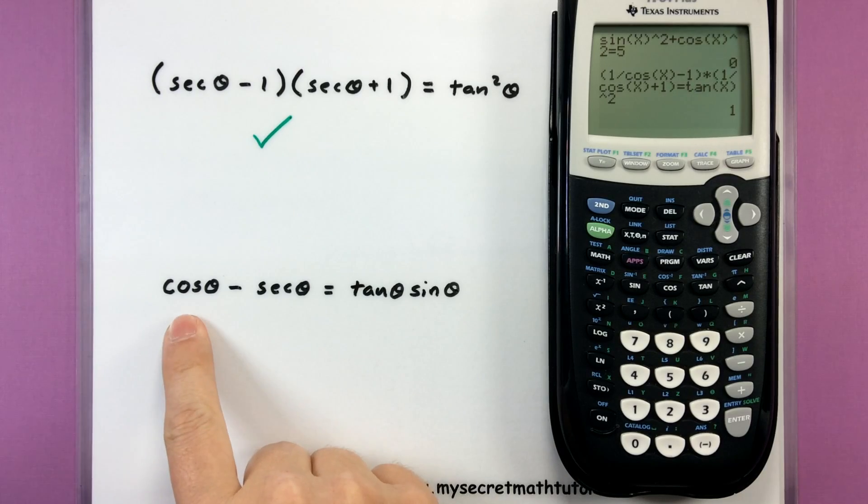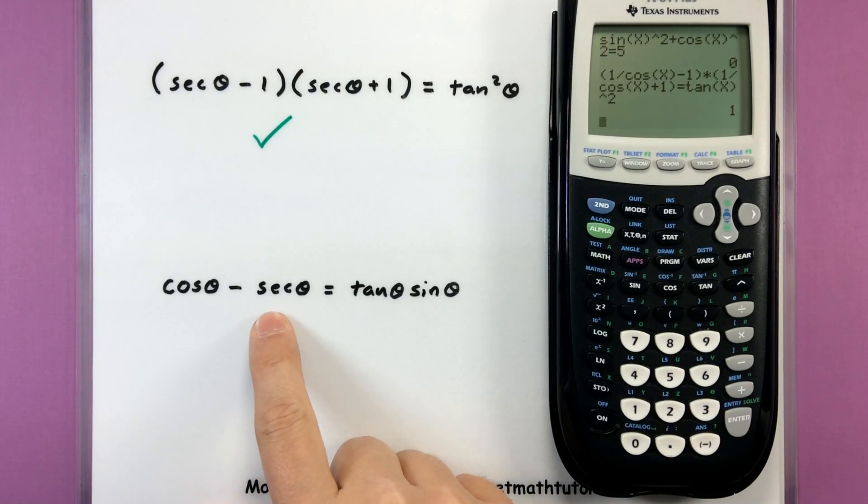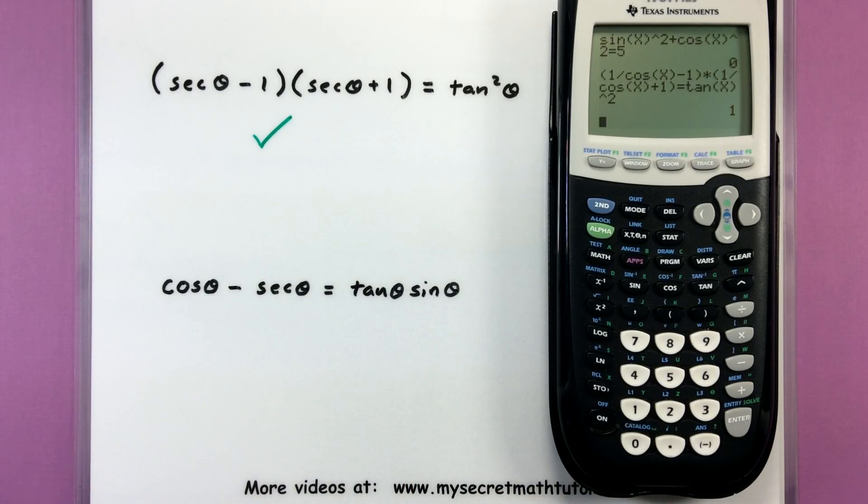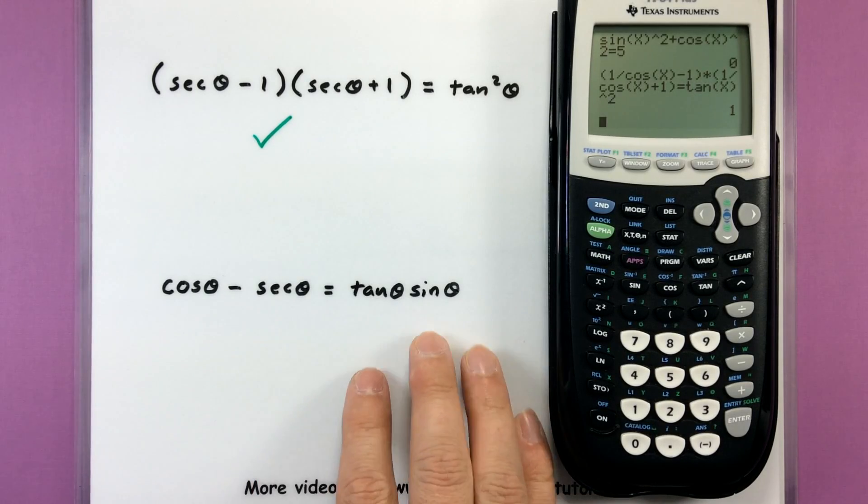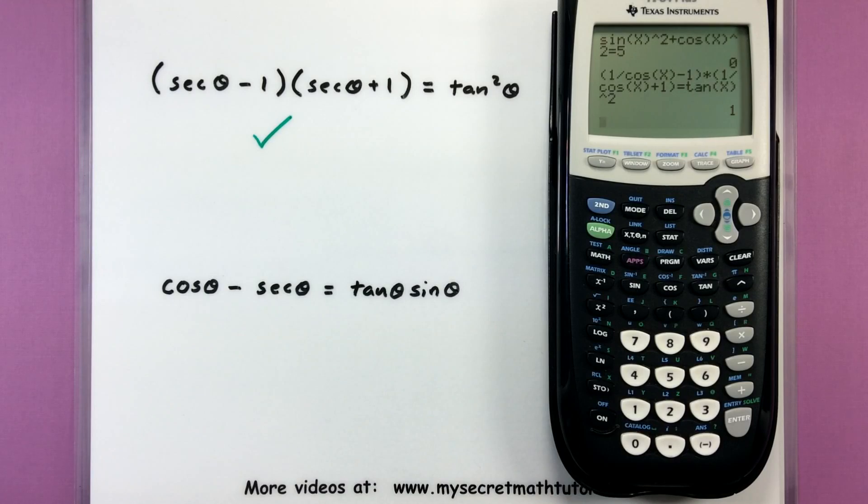Let's try the next one. Cosine of theta minus secant of theta equals tangent of theta multiplied by sine of theta. Again, maybe I went through some work simplifying. This is my answer. I'm not sure if it's true, and I just want to check it.